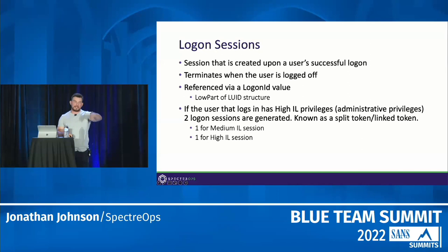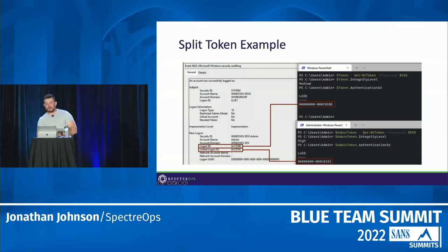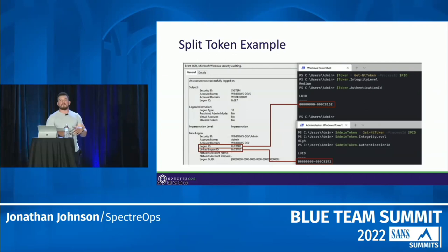There's linking within the OS — a 'buddy logon ID' — so whenever you want to elevate, it knows which logon session to use. Here's an example: a 4624 event showing two different logons — the linked logon and the logon itself, both with hex values representing the low part of the LUID. Using the NT Object Manager tool by James Forshaw, I'm getting my current token and showing the authentication ID, which is one of the places logon IDs are referenced within the token structure.